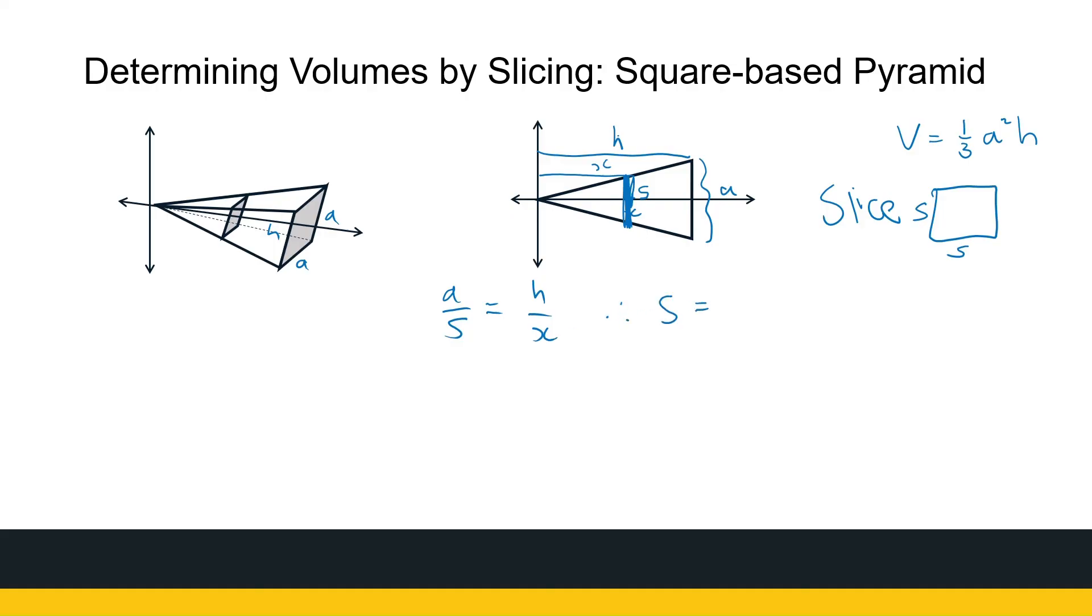So therefore, S I can have in terms of a, h, and x. S is then ax over h. So then when I look at my volume formula, it's the integral from 0 to h of that area. So it's S², so it's (ax/h)² dx.